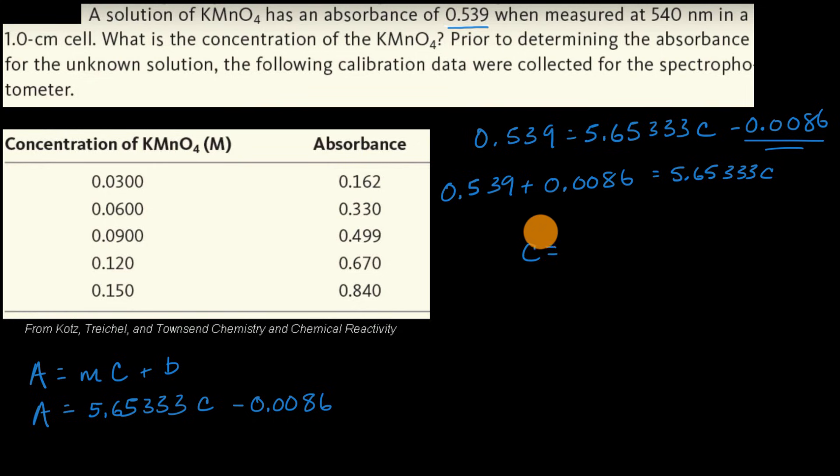This gives us C approximately equals 0.539 plus 0.0086 divided by 5.65333.